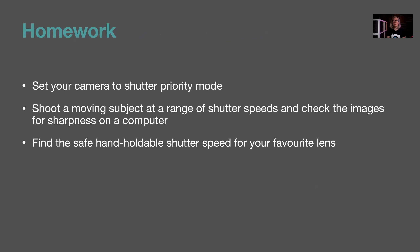For homework — and this is purely optional — set your camera to shutter priority mode and shoot a moving subject at a range of shutter speeds to check which images look sharp. Try different speed subjects: kids cycling, a dog running, someone walking — and see what shutter speed you need to freeze each one. Also try finding your safe hand-holdable shutter speed for your favourite lens, following the process described, and see how low you can go.